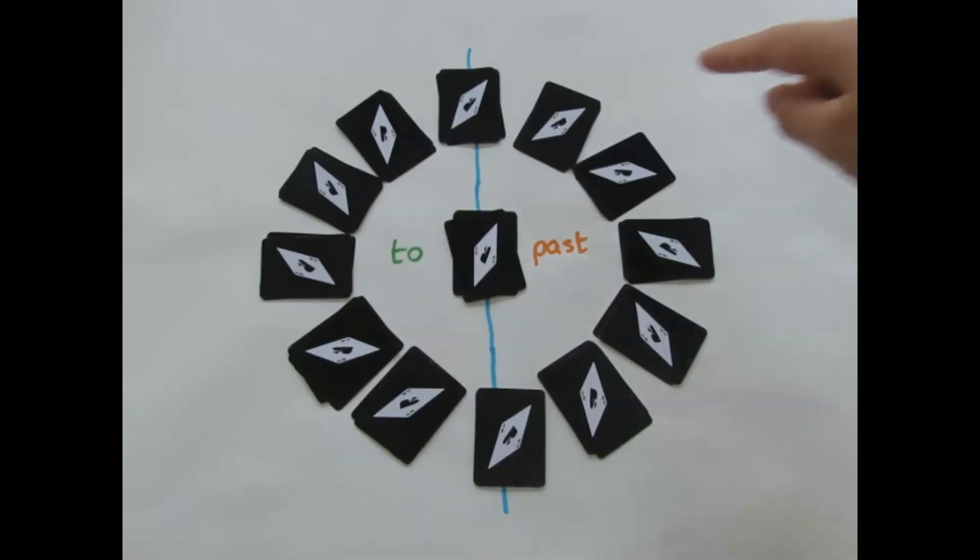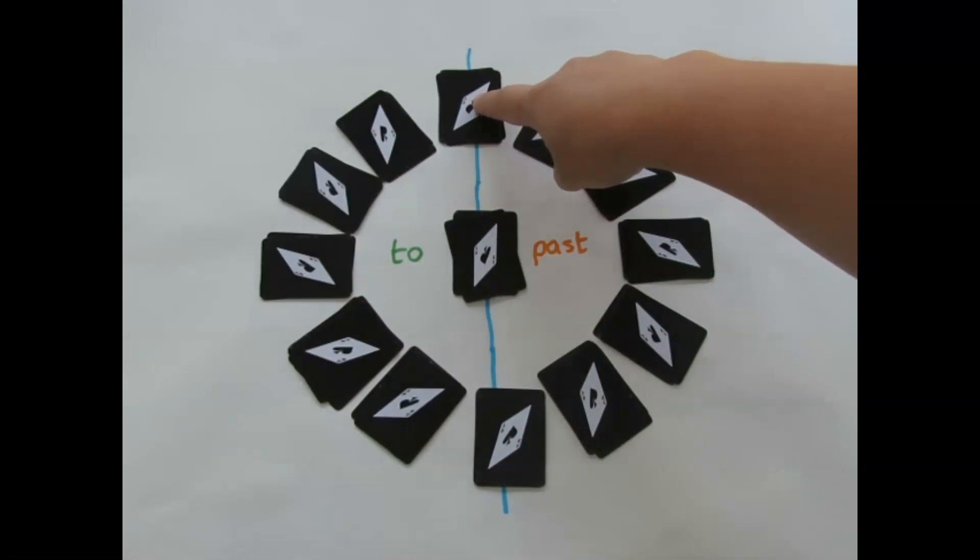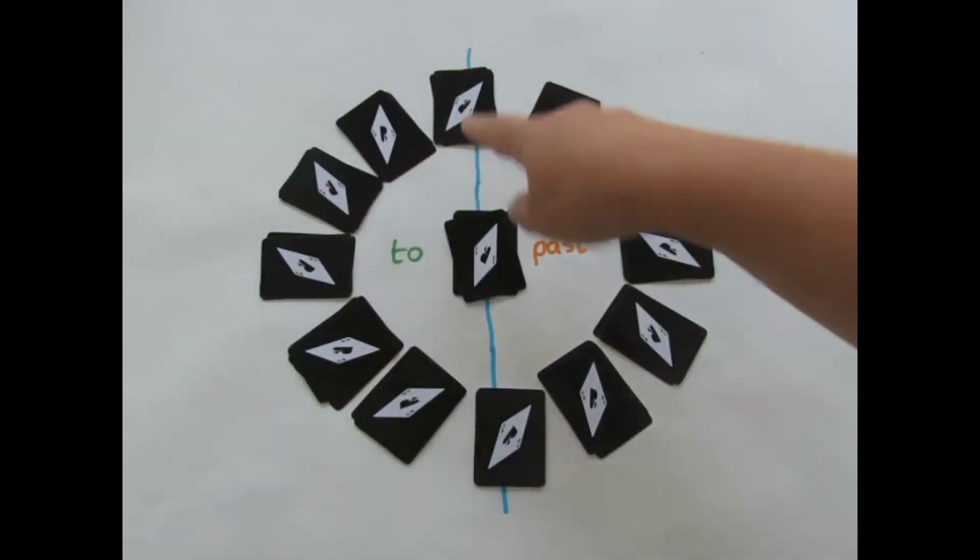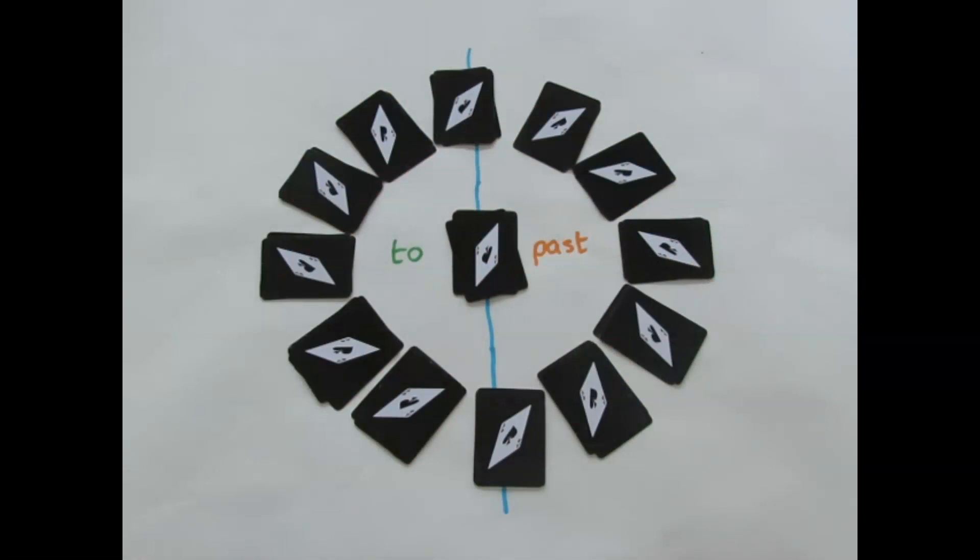You deal out all the cards in a clock arrangement. So you have 12 here at the top, all the way around, and then you end up with four cards in the centre.